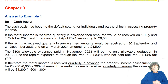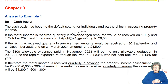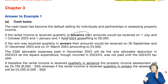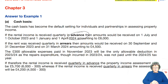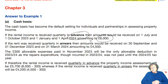If the rental income is received quarterly in advance, then the amount would be received at the beginning of the quarter — so that would be the 1st of July, 1st of October, 1st of January, and the 1st of April. That's how much has been received — that's the beginning of the quarter, and that's the easy way to remember.